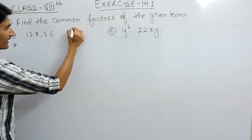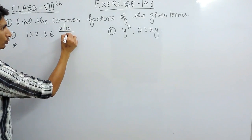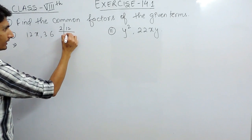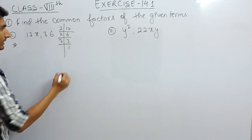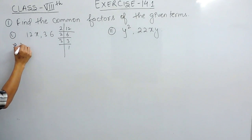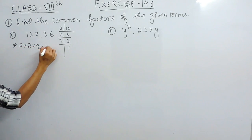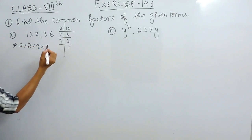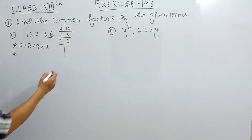To find the factors of 12, we can divide it as 2 multiplied by 6, then 2 multiplied by 3, and 3 multiplied by 1. So 12 can be written as 2 × 2 × 3, and this term is multiplied by x. The second term is 36, which can also be factorized.